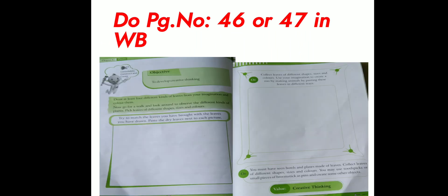Next, do page number 46 or 47 in workbook. Draw at least 4 different kinds of leaves from your imagination and colour them. Now go for a walk and look around to observe the different kinds of plants. Pick leaves of different shapes, size and colours. Try to match the leaves you have brought with the leaves you have drawn.